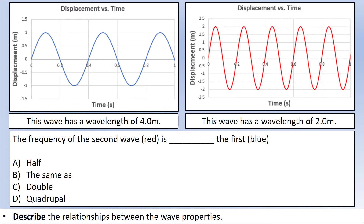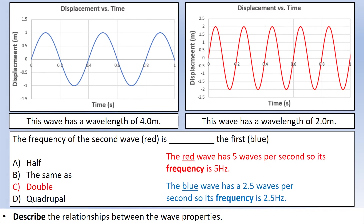Now let's compare the frequency of the two waves. For the red wave, we can see that in one second there are five complete wave cycles, giving a frequency of 5 Hertz. We could also calculate it: one divided by 0.2 seconds equals 5 Hertz. The blue wave has 2.5 full cycles per second, so 2.5 Hertz — consistent with what we calculated earlier. Therefore the red wave has double the frequency, which makes sense since it had half the time period.